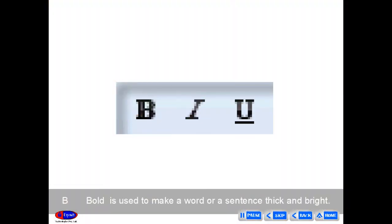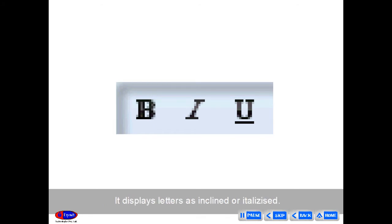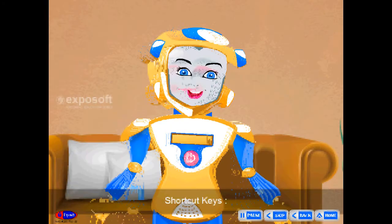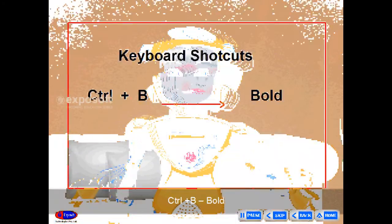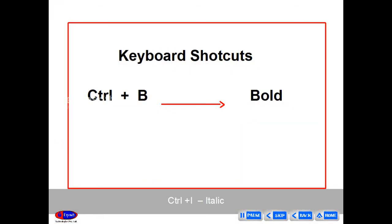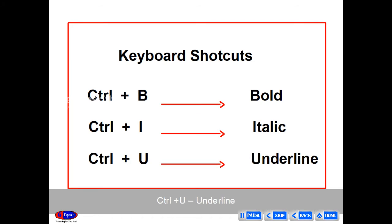Bold (B) is used to make a word or sentence thick and bright. Italic is used to italicize a word or sentence, displaying letters as inclined. Underline (U) is used to underline a word or sentence. Shortcut keys: Ctrl+B for Bold, Ctrl+I for Italic, Ctrl+U for Underline.